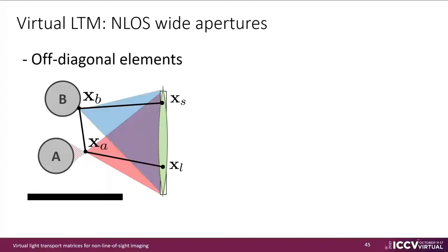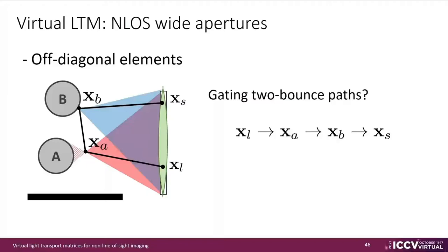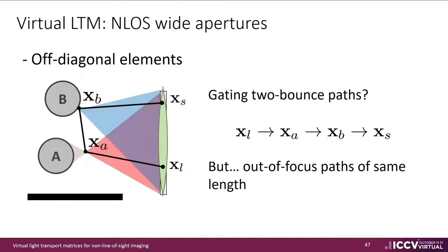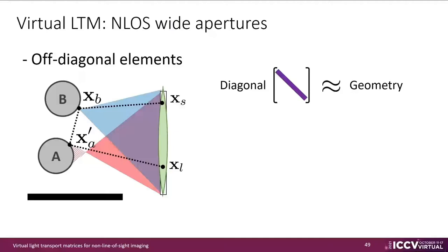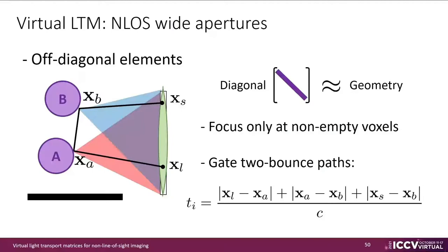Off-diagonal elements contain light paths of at least two bounces. If either projector or camera focus on an empty voxel, propagation will introduce defocus illumination. While gating two-bounce paths can mitigate this effect, there may be defocus paths with the same gating length, as shown in the left diagram for point XA prime. To solve this problem, we propose to use the diagonal of the LTM as an oracle of geometry locations. When computing off-diagonal elements, we can choose to focus projector and camera lenses only at non-empty locations of the hidden space. Combined with two-bounce temporal gating during propagation, our off-diagonal elements represent in-focus first-order indirect illumination.